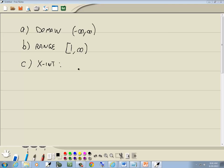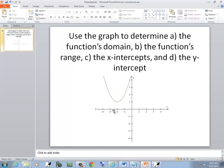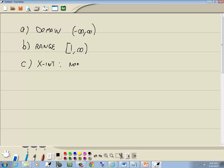Now, C is our x-intercepts. Now, this one doesn't have any. It doesn't cross the x-axis or touch it. So this is none.